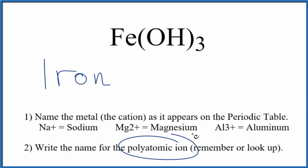Then we write the name for the polyatomic ion. That's OH. It's called the hydroxide ion. It's really one you should remember. So right now, for Fe(OH)₃, we're calling it iron hydroxide.